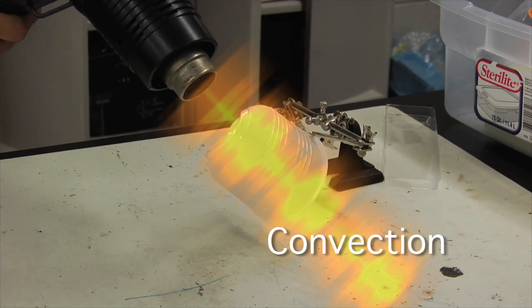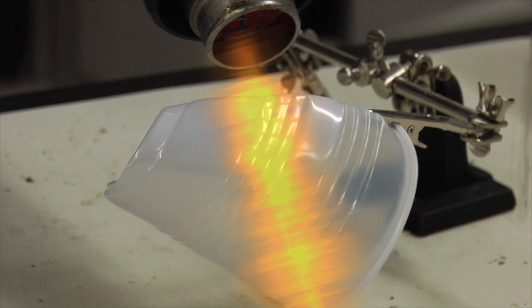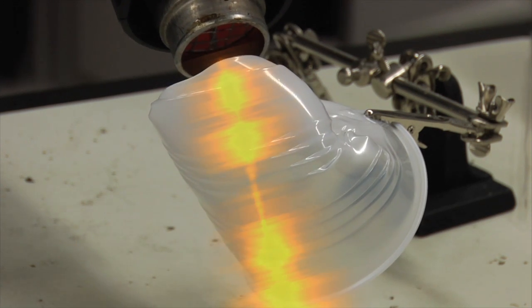With convection, heat is transferred to another object through the movement of fluids or gases. Think of how a blow dryer works.